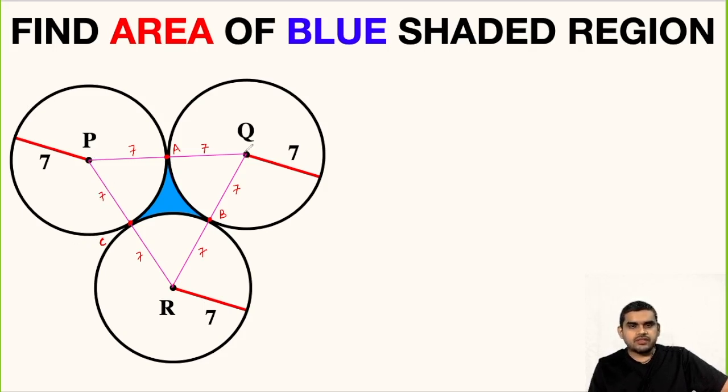So if we see here, we get a triangle like this: this point is P, this is Q, and this is R. And each side of this triangle is 14 units, so this is an equilateral triangle.